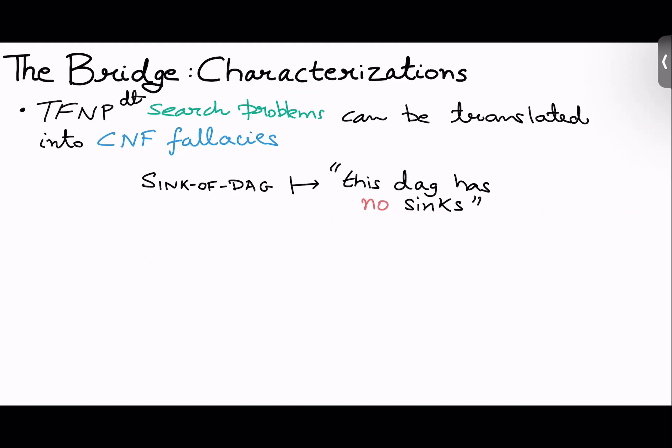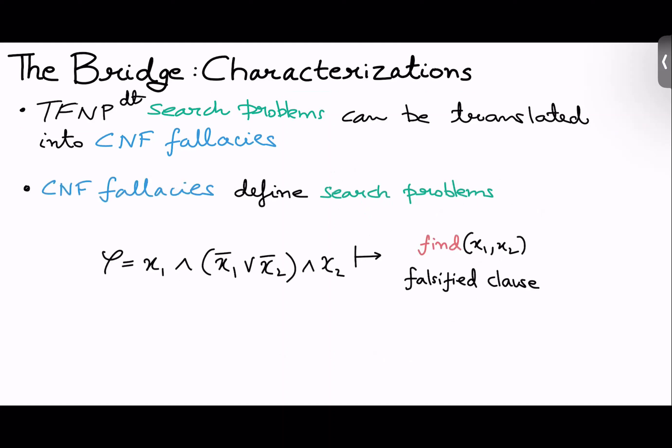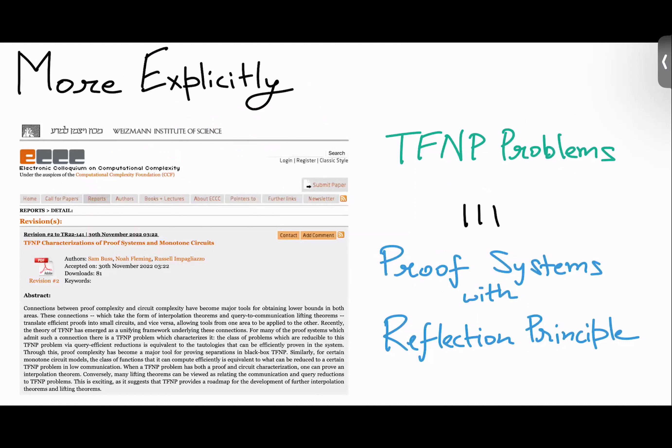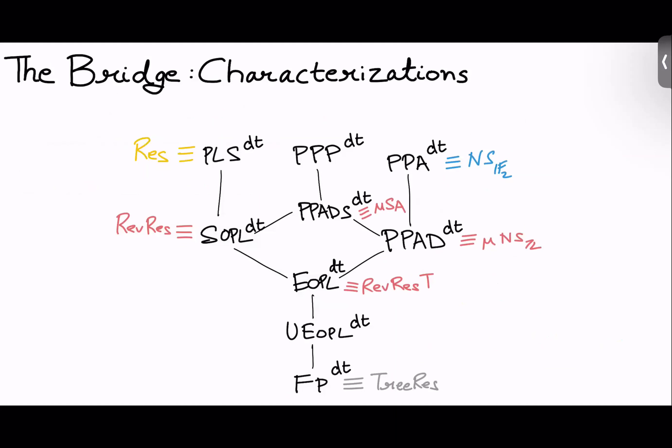Okay. So back to why this first one is true. Search problems in the black box model can be encoded by CNF. And CNF very naturally defines search problems. This is just because I gave you an unsatisfiable CNF, and I gave you an input, so you could find which clause is falsified. More explicitly, this is the paper I was talking about. There was a follow-up to this work by Buss, Fleming, and Pitassi, which actually proved that TFNP problems are equivalent to proof systems with a reflection principle. Reflection principle just means that this proof system can prove its own soundness.